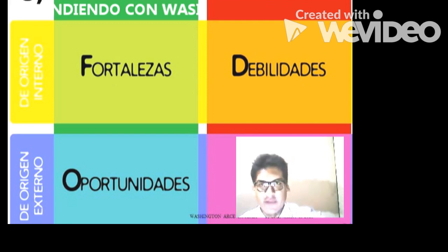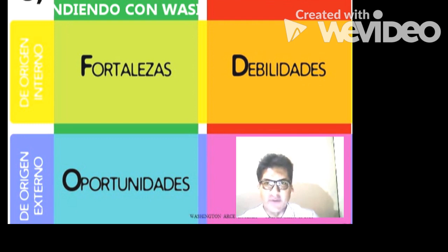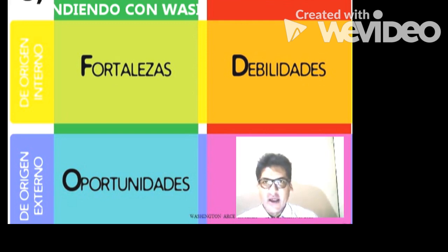Vamos a hablar de un tema muy importante llamado FODA, o también llamado Matriz DAFO, que viene de las siglas F-O-D-A: Fortalezas, Oportunidades, Debilidades y Amenazas. En una tabla de doble entrada observamos que los puntos débiles son las debilidades y las amenazas, mientras que los puntos fuertes son las fortalezas y las oportunidades.